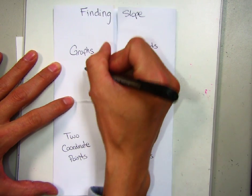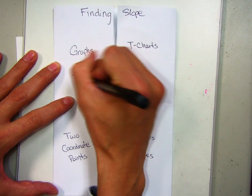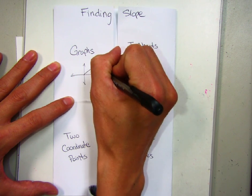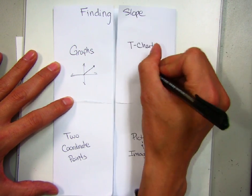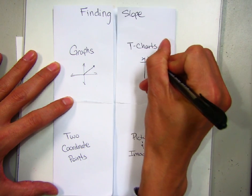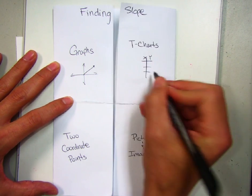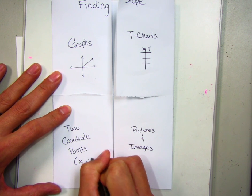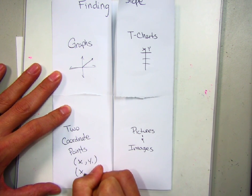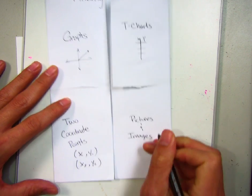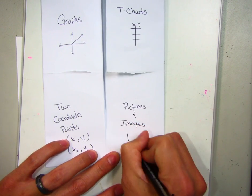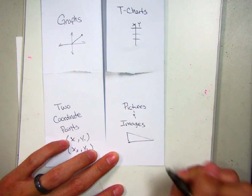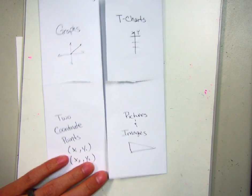So a graph, that's going to be something where you have a y and x-axis and you have some kind of line. T charts, that's when you have your x and y, you have all these different numbers in there. Two coordinate points, that's where you're going to have x1, y1, and another x, x2, and y2. And then images or pictures, maybe just a picture of a triangle, right triangle, you'll be able to find the slope of something like that.